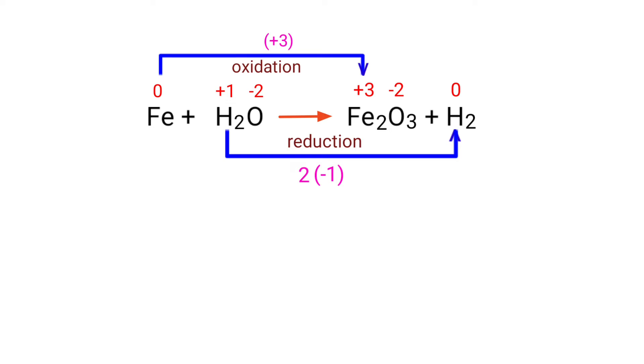Now you can make the increased oxidation number equivalent to the decreased oxidation number. To do this, multiply the increased oxidation number by a coefficient of 2. Now you can write the equation as 2Fe plus 3H2O gives us Fe2O3 plus H2.